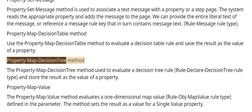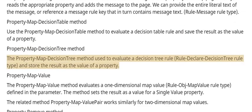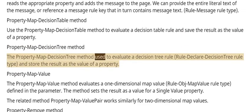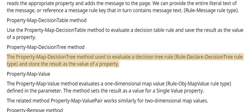The Property Map Decision Tree method is used to evaluate a decision tree rule — Rule Declare Decision Tree rule type — and store the result as the value of a property.